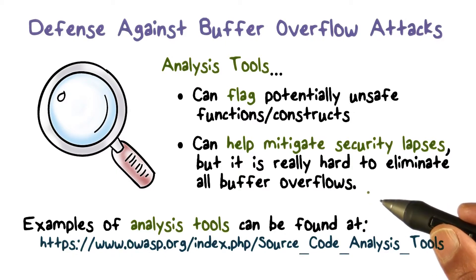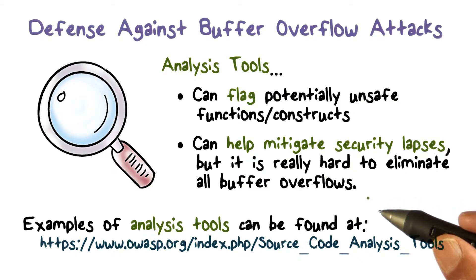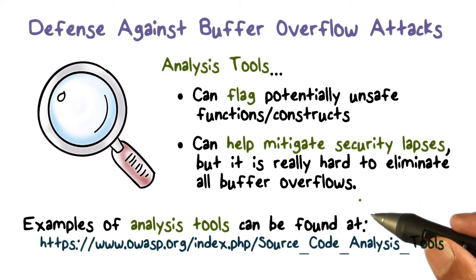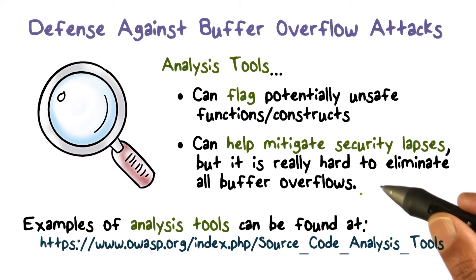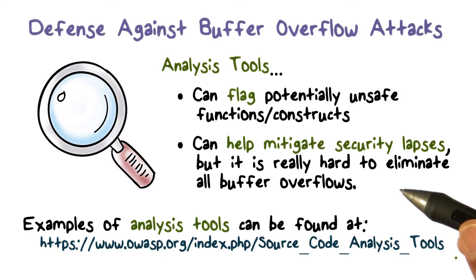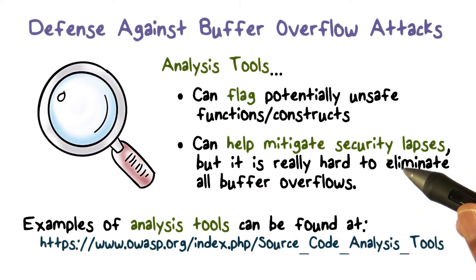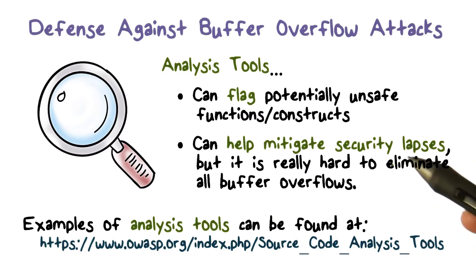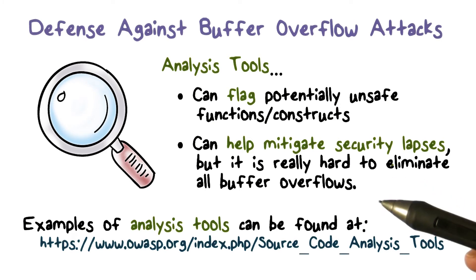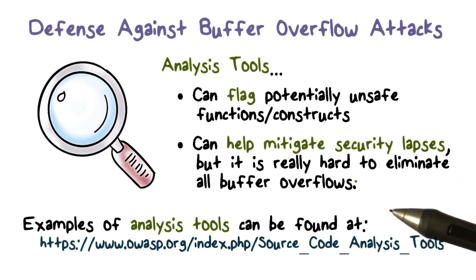But if you have source code, you're writing the code and you believe in secure coding. If you work for a company, part of their software development process may include reviews and passing code through these kinds of tools. We all recognize the importance of writing secure code. These analysis tools can help you identify potential vulnerabilities and mistakes that could result in the kinds of issues we've been talking about. Spending a little time with these tools is a good idea and will help you write more secure code.